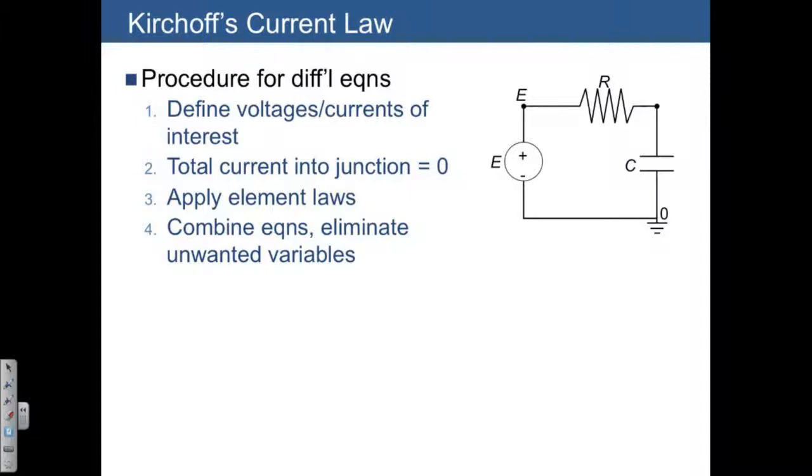Kirchhoff's Current Law involves looking at each junction in our system and realizing that the total current into any junction has to be equal to zero. That means that electrons cannot be destroyed or created, they can only go from one place to another.